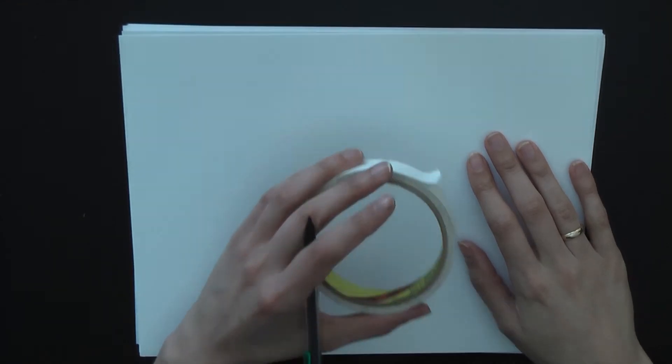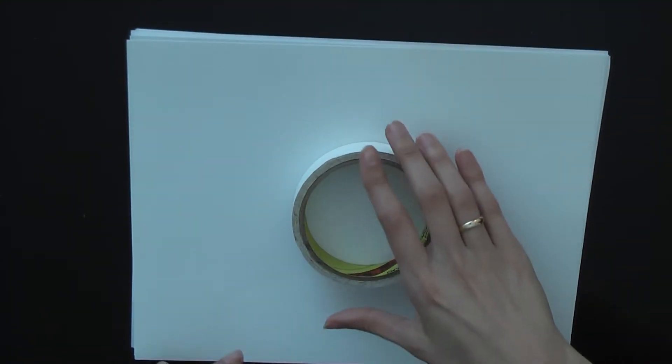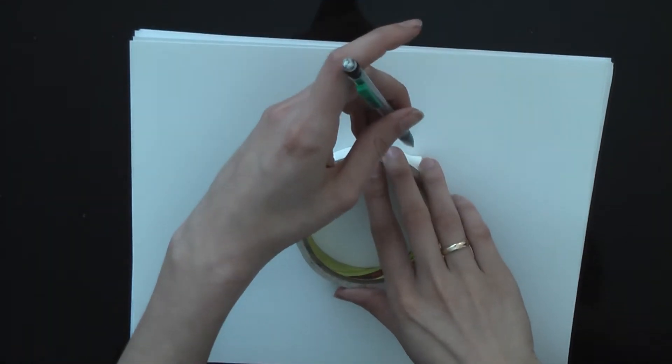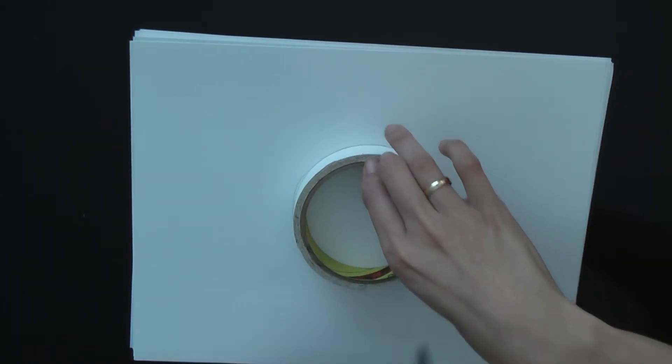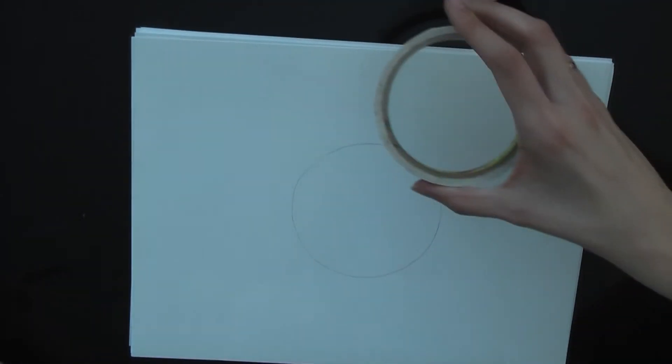So grab your round object and somewhere in the middle of the paper, place it there. Now I'm going to go around the round object. Trace it like so and we're done with round object.